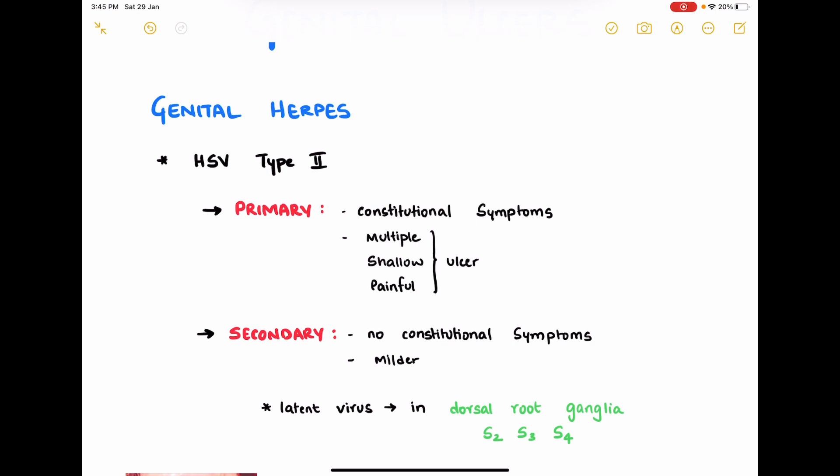Secondary herpes is where there are no constitutional symptoms; it is milder and a shorter disease. The reason you have secondary disease or recurrence in genital herpes is that the latent virus in the dorsal root ganglia of S2, S3, and S4 segments can get reactivated in certain conditions, especially in stress and immunocompromised conditions.